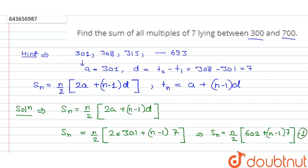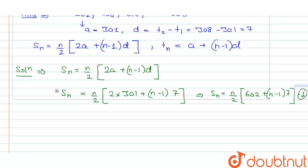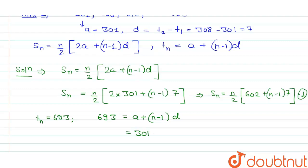Now take the formula for last term. Because in the series we know that last term is 693, we will try to get the value of n from here. 693 = a + (n-1)d. Let's put the value of a is 301 plus (n-1), d is 7.